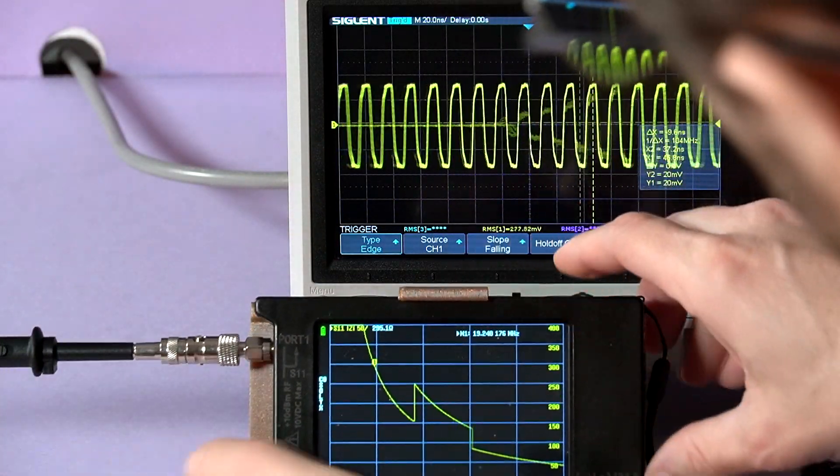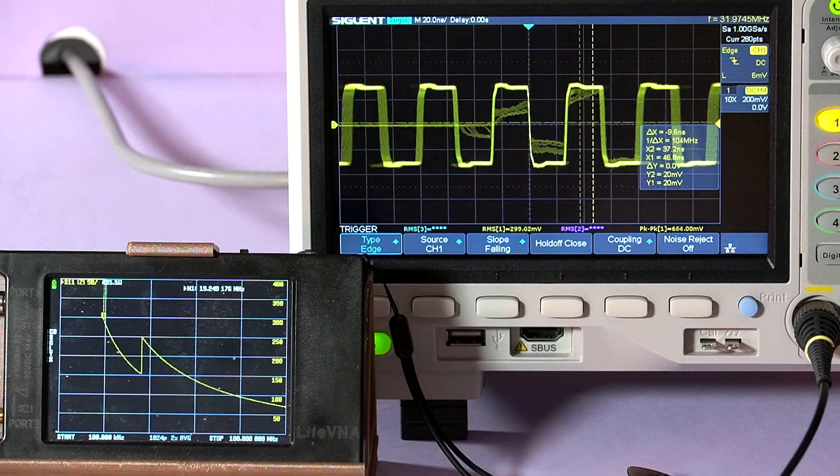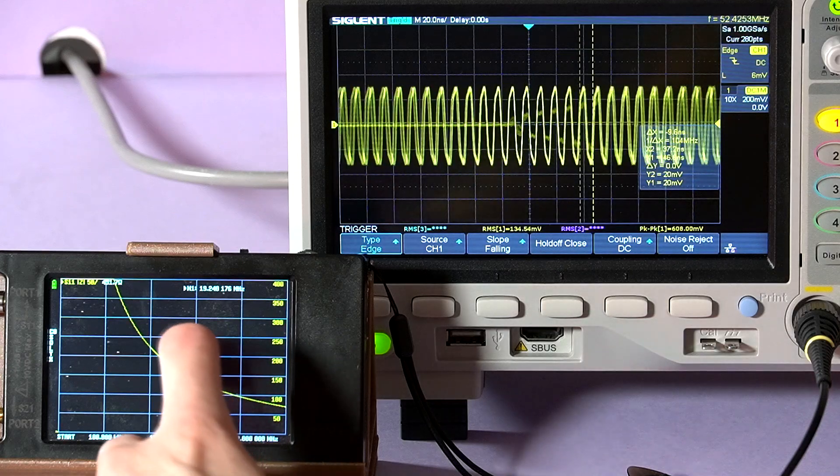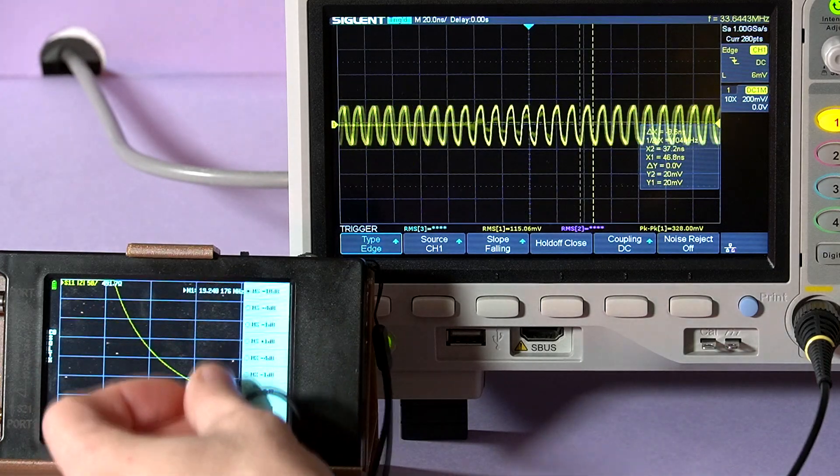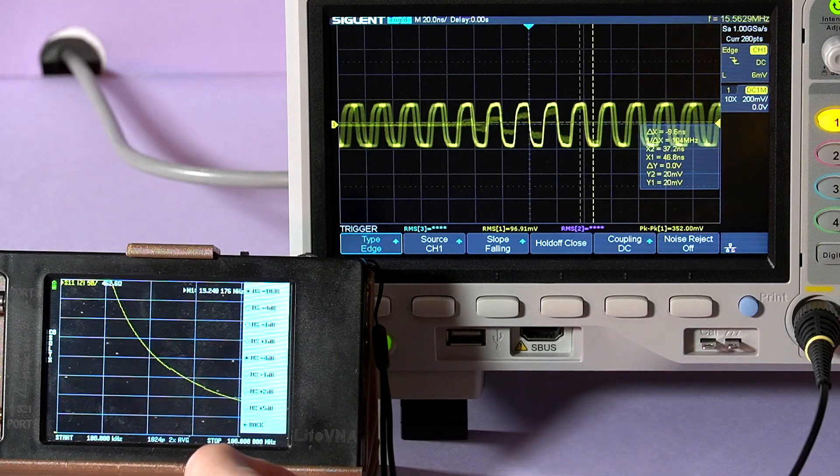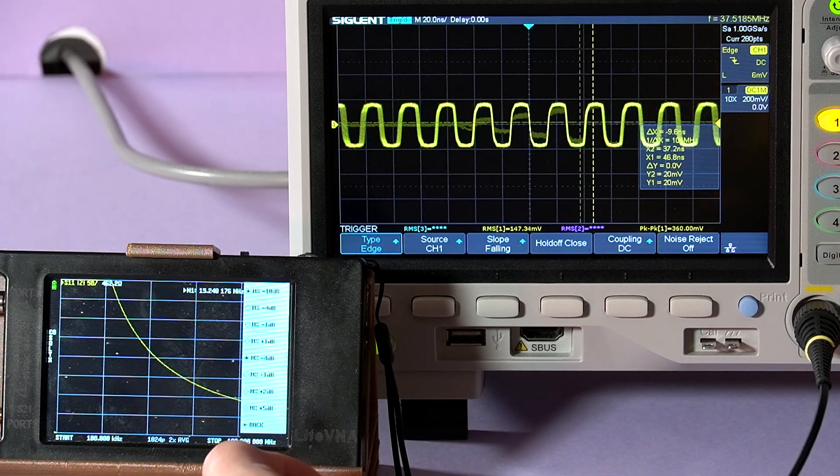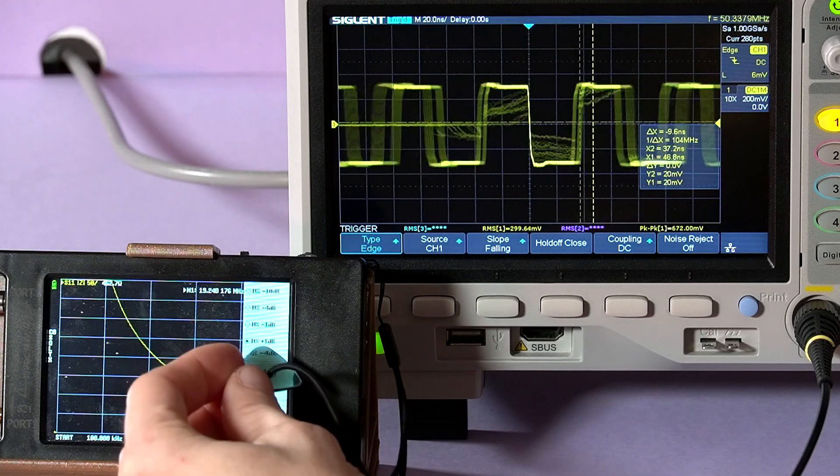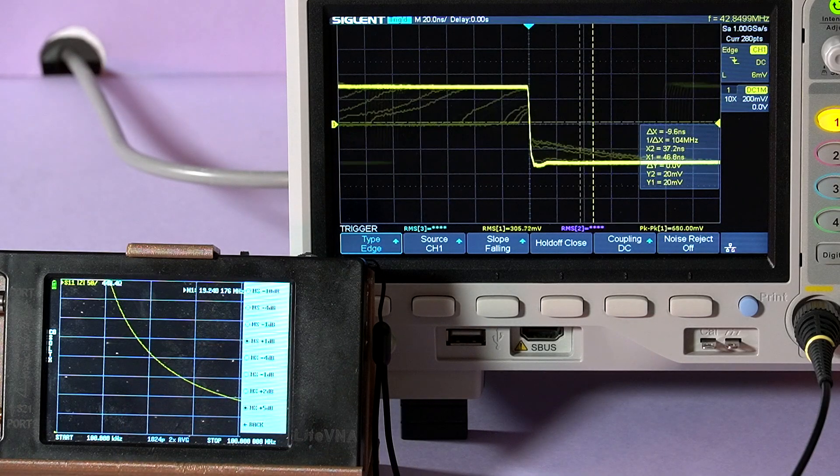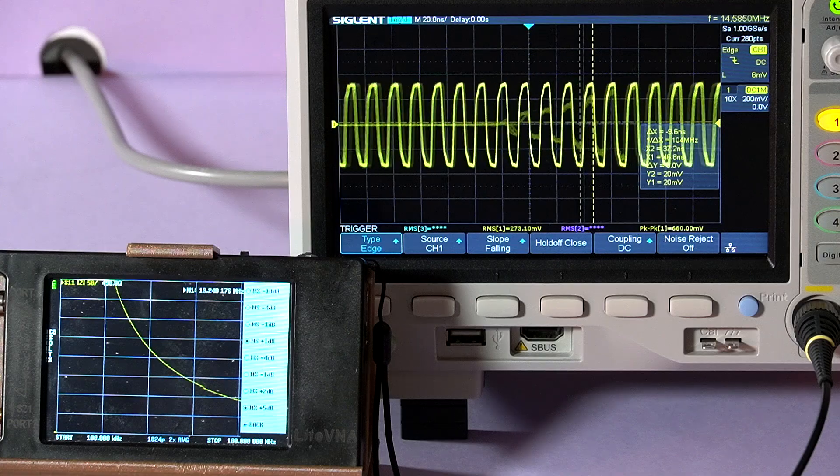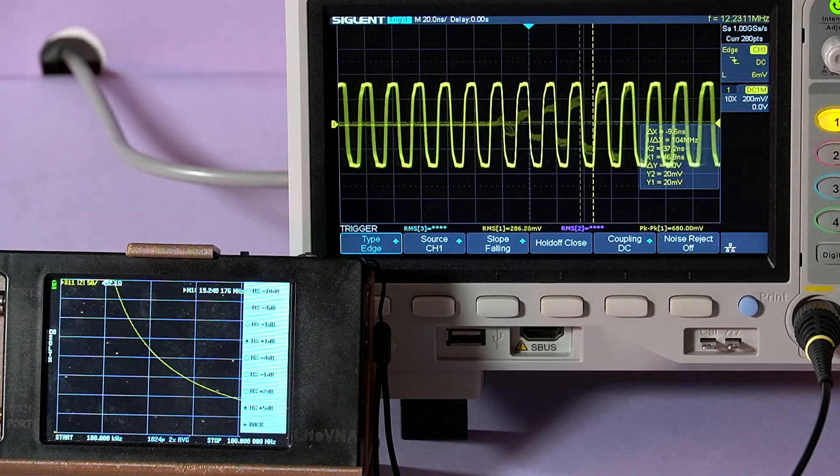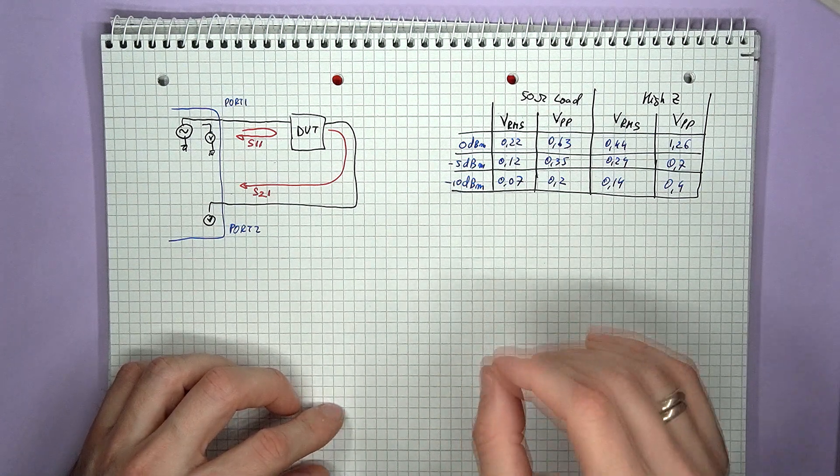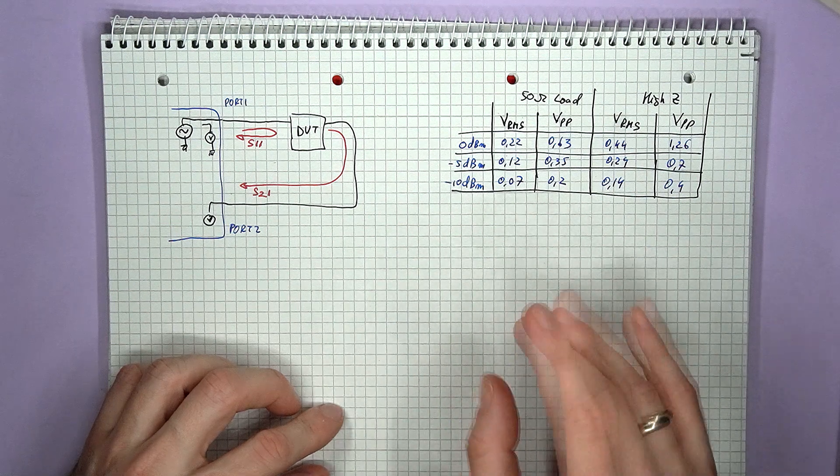Last thing I want to mention today is the exact test signal level. So, the VNA works by injecting a test signal into the measured device and observing how the signal is impacted. To get the best noise immunity and clear results in extreme cases, you want the injection signal to be as large as possible. So, the larger the voltage, the more clear the result should be.